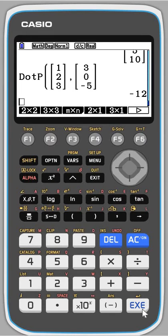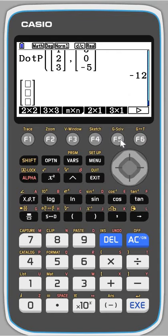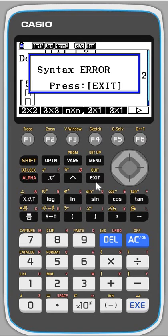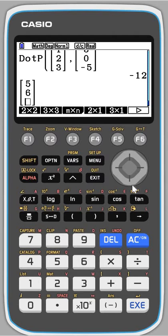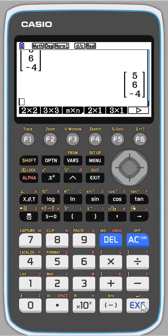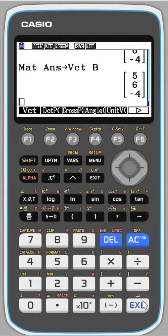I could also use this one to help me store vectors. So I could press a 3 by 1 vector and I want to have 5, 6, negative 4. Execute. I'm going to do arrow. And if I want to store it as a vector, then I need to press the Options button and Mat Vect, and then F6 till I see Vect Vector B. Then I can recall that by pressing Vect Alpha B and it will come back again.